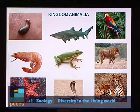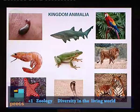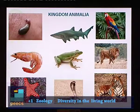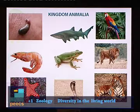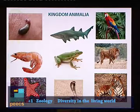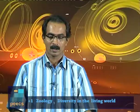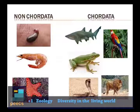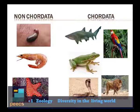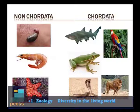These organisms come under kingdom Animalia: leech, prawn, starfish, tiger, shark, tree frog, cobra, parrot, lion, and tiger — all different characters. Leech, prawn, and starfish are classified under non-Chordata because they do not have a notochord. Other animals come under phylum Chordata, as all these animals have a notochord.